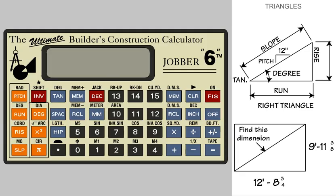The Jobber 6 makes solving right triangles very easy. When the calculator is turned on, it is automatically in the triangle mode ready for solving right triangles by using the triangle key located on the left side of the keyboard.